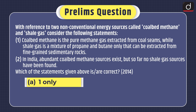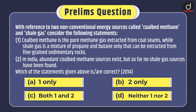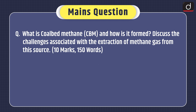Now moving on to practice questions. First, a prelims question asked in the 2014 exam: With reference to two non-conventional energy sources called coal bed methane and shale gas, consider the following statements. One: coal bed methane is the pure methane gas extracted from coal seams, while shale gas is a mixture of propane and butane only that can be extracted from fine-grained sedimentary rocks. Two: in India abundant coal bed methane sources exist, but so far no shale gas sources have been found. Which of the statements given above is or are correct — one only, two only, both one and two, or neither one nor two? You can send the answer in the comment section. The mains question is: What is coal bed methane or CBM and how is it formed? Discuss the challenges associated with the extraction of methane gas from this source. That's all for today. Stay tuned for the next episode. Thanks for watching.